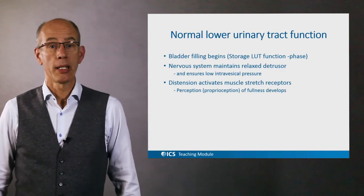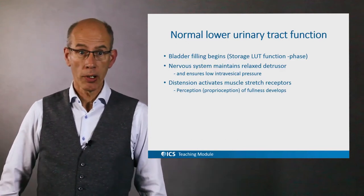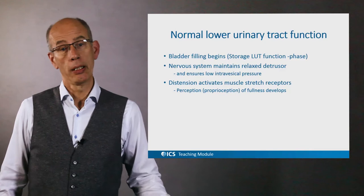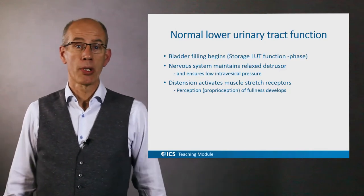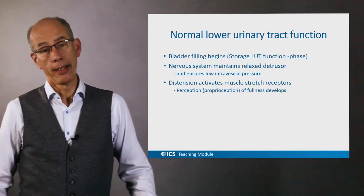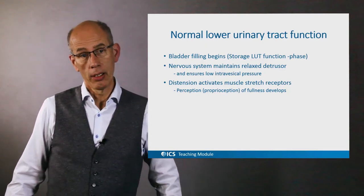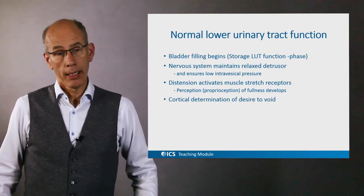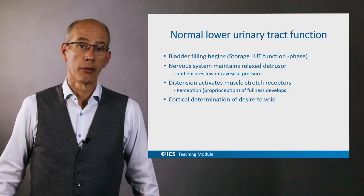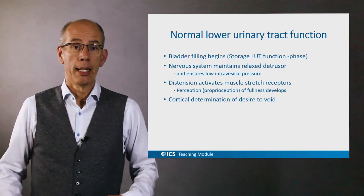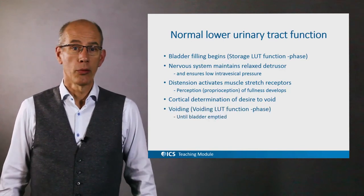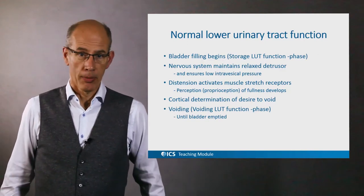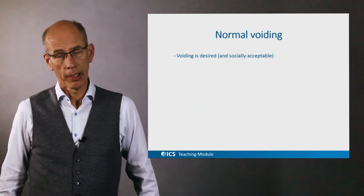This tension activates muscle stretch receptors, giving awareness and perception of fullness on a gradual scale. It is proprioception, which is neurologically identical to the sensation of all the muscles in the human body. At a given moment there is a cortical determination of a desire to void — the bladder is full enough and there is a need to void, at which point voiding can take place until the bladder is emptied, and then the bladder starts to fill again.